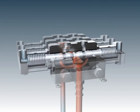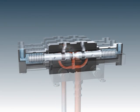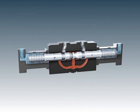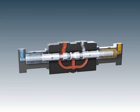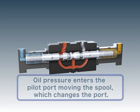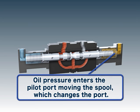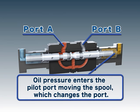The pilot port of the multiple control valve receives hydraulic oil from the remote control valve. Pilot pressure from the remote control valve moves the spool and redirects the hydraulic oil from the pump port to either port A or port B.